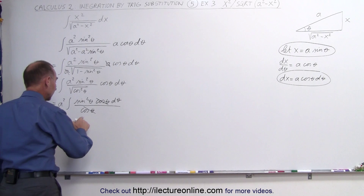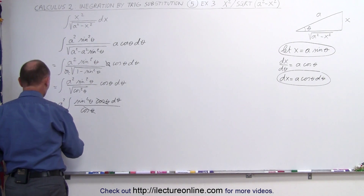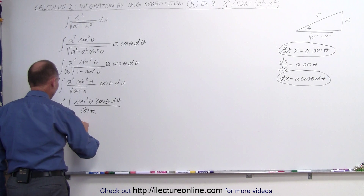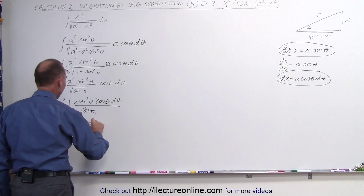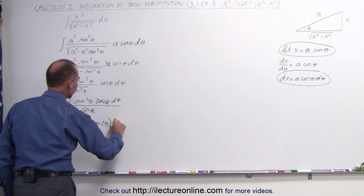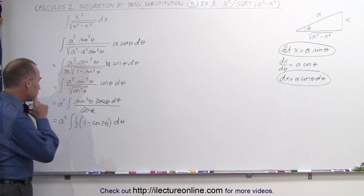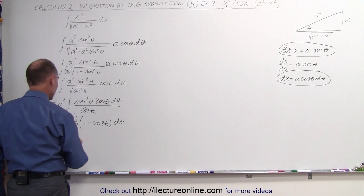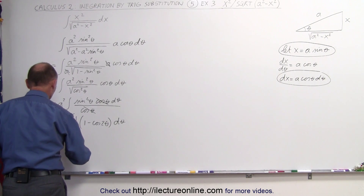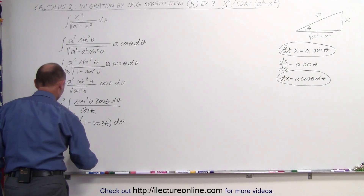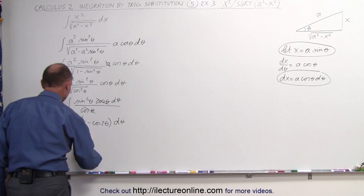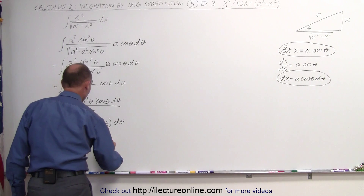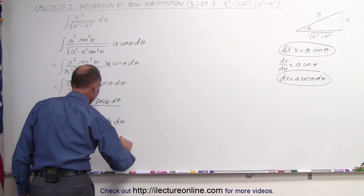To integrate the sine squared of theta, we find the equivalent: a squared times the integral of one half times (1 minus the cosine of 2θ) dθ. After that, we can separate that into two separate integrals. Taking the one half out, we get a squared divided by 2 times the first integral of dθ, minus the second integral of the cosine of 2θ dθ.